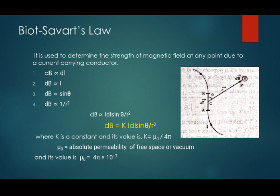We will try to derive a mathematical formula telling us about the strength of the magnetic field produced around a current-carrying conductor. It was experimentally done by two physicists, Biot and Savart, and it is known as Biot-Savart's Law.